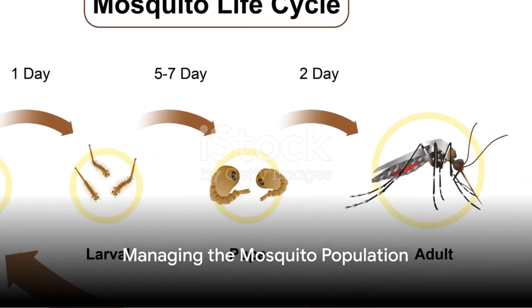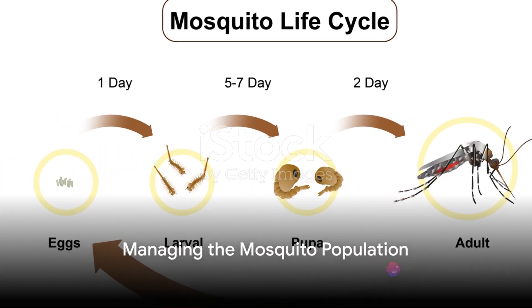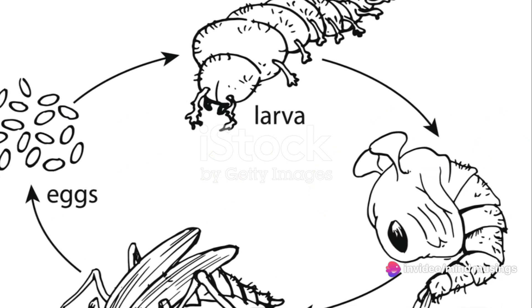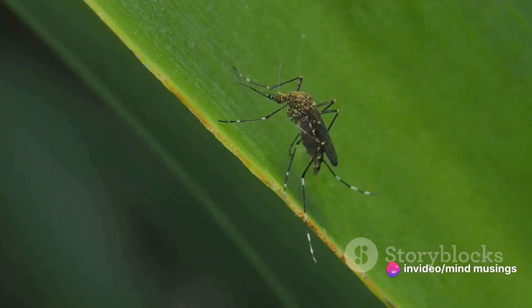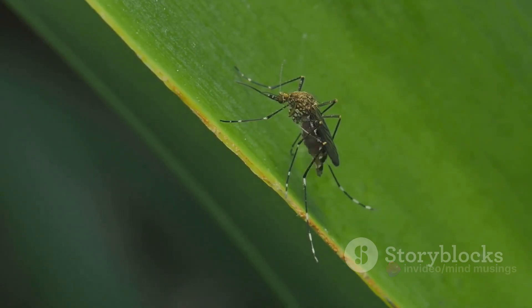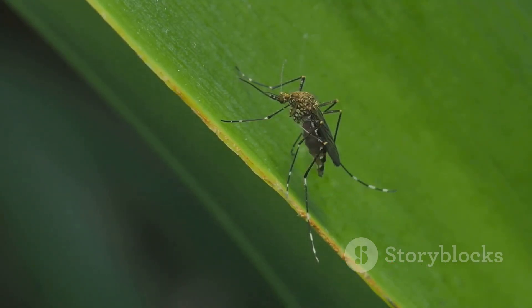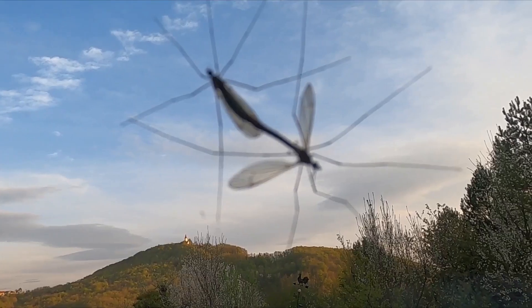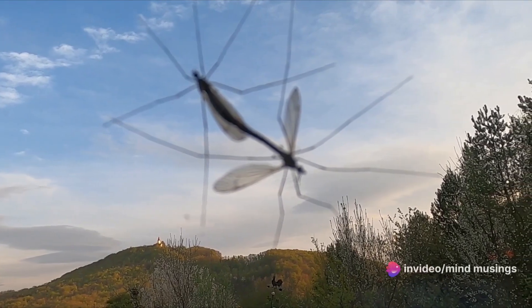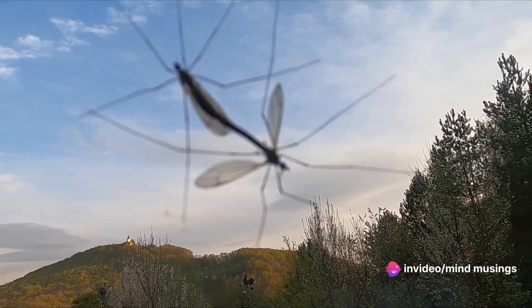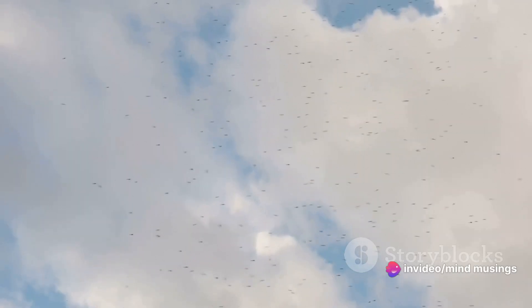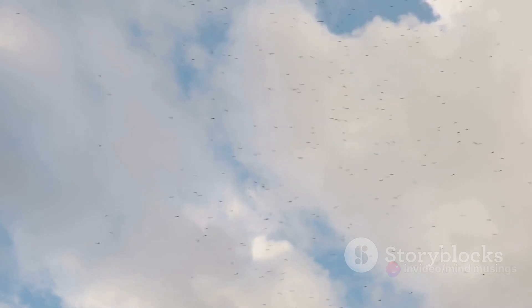The life of a mosquito is a quick and efficient process, spanning from eggs to adults in roughly two weeks. This rapid life cycle, coupled with their adaptability, makes mosquitoes a persistent part of our ecosystem. It's also worth noting that controlling the mosquito population isn't just about swatting the adults — it involves managing their breeding grounds, disrupting their life cycle right from the egg stage.